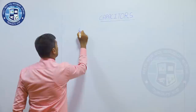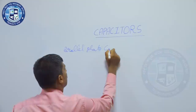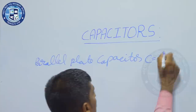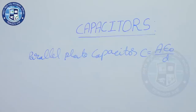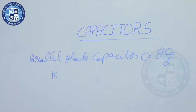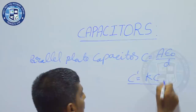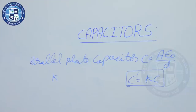We already discussed the expression for the parallel plate capacitor. The parallel plate capacitor C is equal to A epsilon naught divided by D. This is for an air capacitor — air is in between the plates. Suppose a dielectric slab with constant K is introduced; the new capacitance C dash is equal to K times C. So capacitance increases by K times.